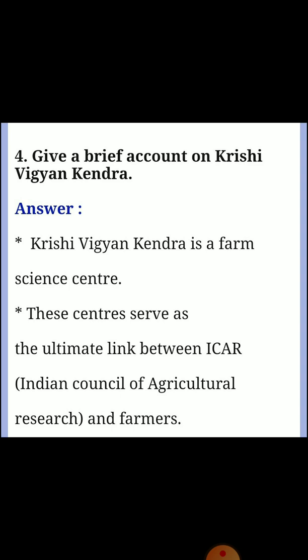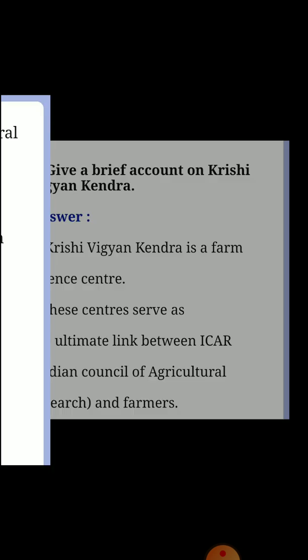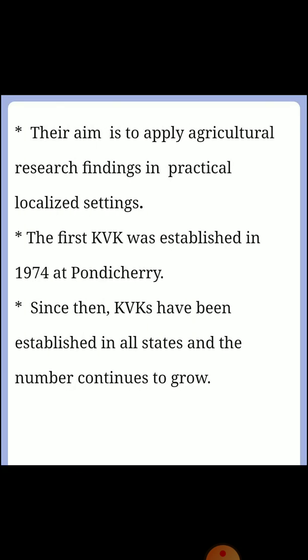Fourth question: Give a brief account on Krishi Vigyan Kendra. Answer: Krishi Vigyan Kendra is a farm science center. It serves as the ultimate link between ICAR - Indian Council of Agricultural Research - and farmers. Their aim is to apply agriculture research findings in practical localized settings. The first KVK was established in 1974 at Pondicherry, and since then KVKs have been established in all states.